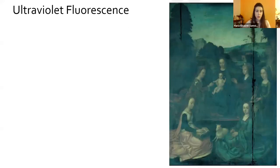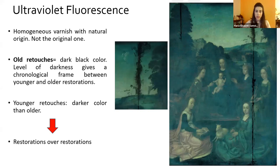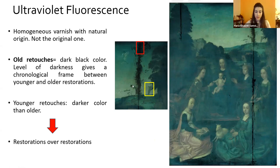The results from the ultraviolet fluorescence gave us information about the varnish, which is a homogeneous one of natural origin, but not the original one. We also found many old retouches — as you can see here, the dark black areas, especially in the join of the two oak boards. The level of darkness gives us a chronological frame between younger and older restorations; younger retouches have a darker color than older ones, so we can say there are restorations over restorations.